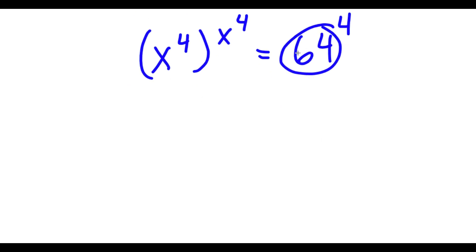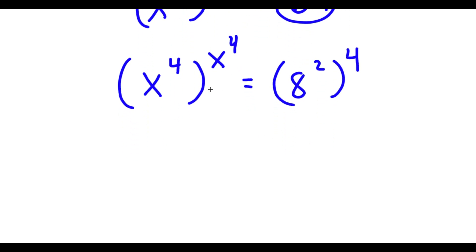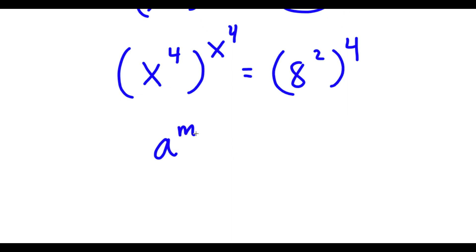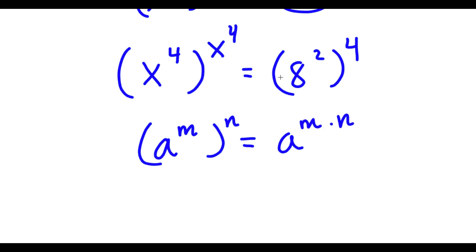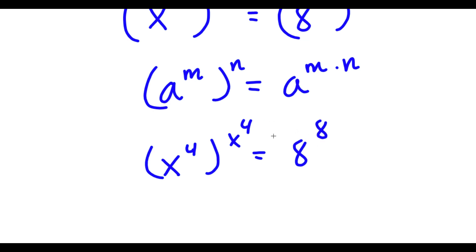Now I'm going to replace 64 with 8 squared. So I have x to the power of 4, all to the power of x to the power of 4, is equal to 8 squared to the power of 4. If I have a to the power of m to the power of n, this equals a to the power of m times n. So 8 squared to the power of 4 equals 8 to the power of 8. Now I have x to the power of 4, to the power of x to the power of 4, is equal to 8 to the power of 8.